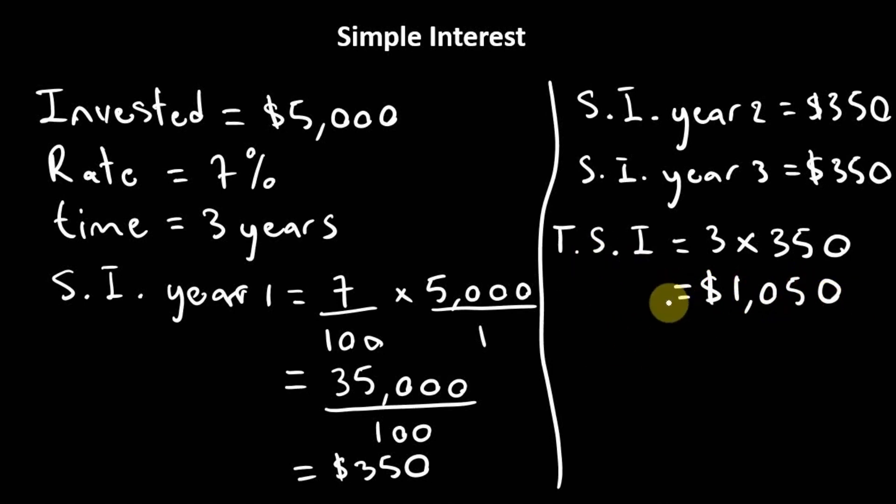So our total simple interest that would have gotten over the three year period would have been $1,050. And this is basically how simple interest work. So if you want to invest money might not be a good option to choose a simple interest route. It's best to invest that money on a compound interest rate. And we'll explain how that works in another video.